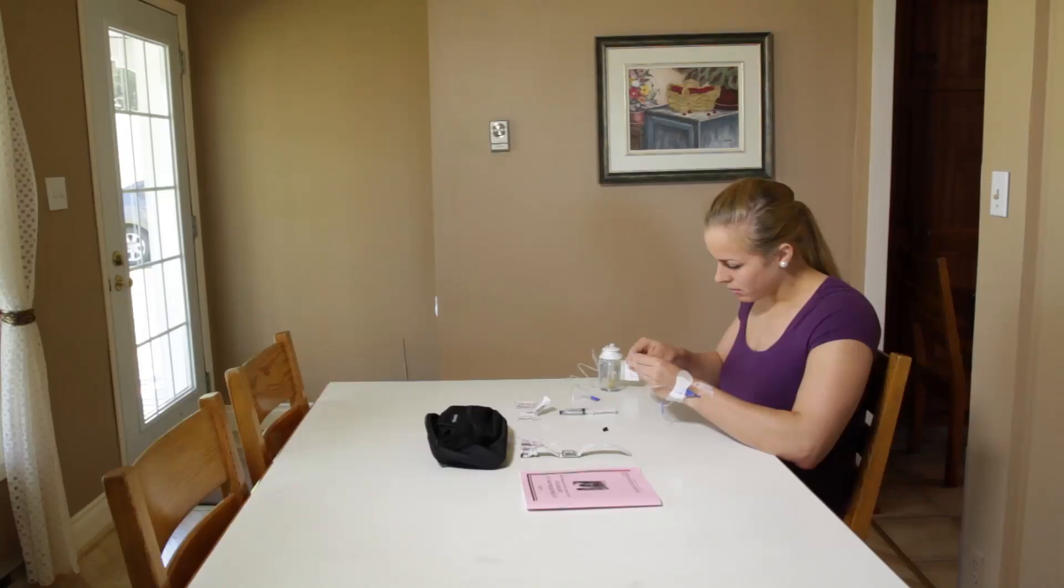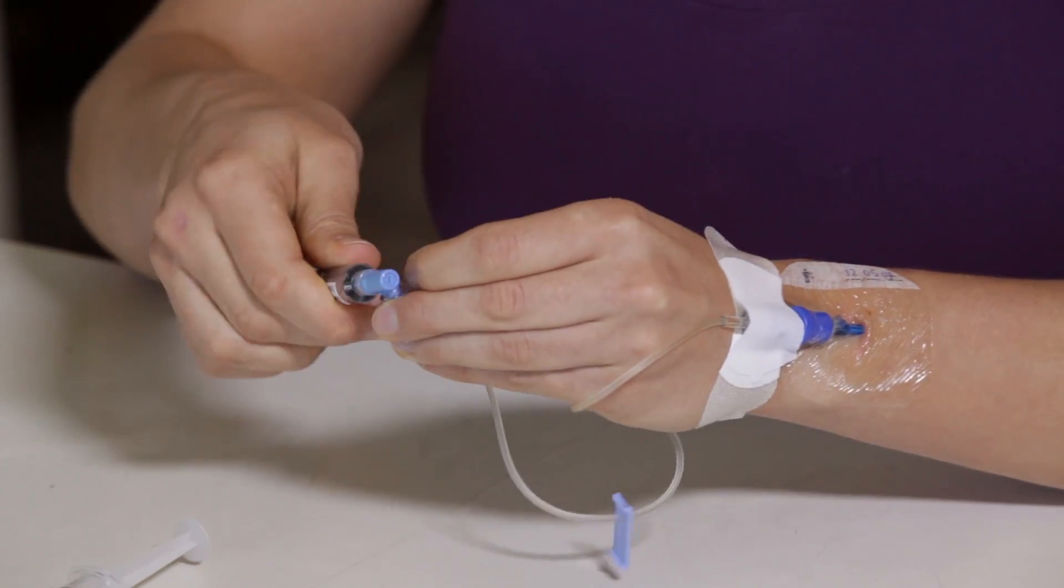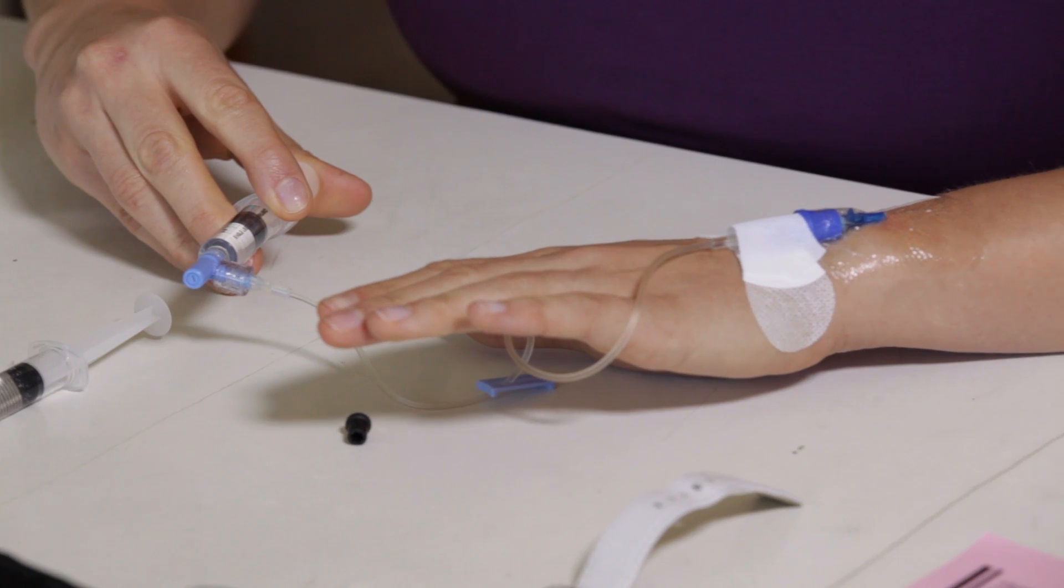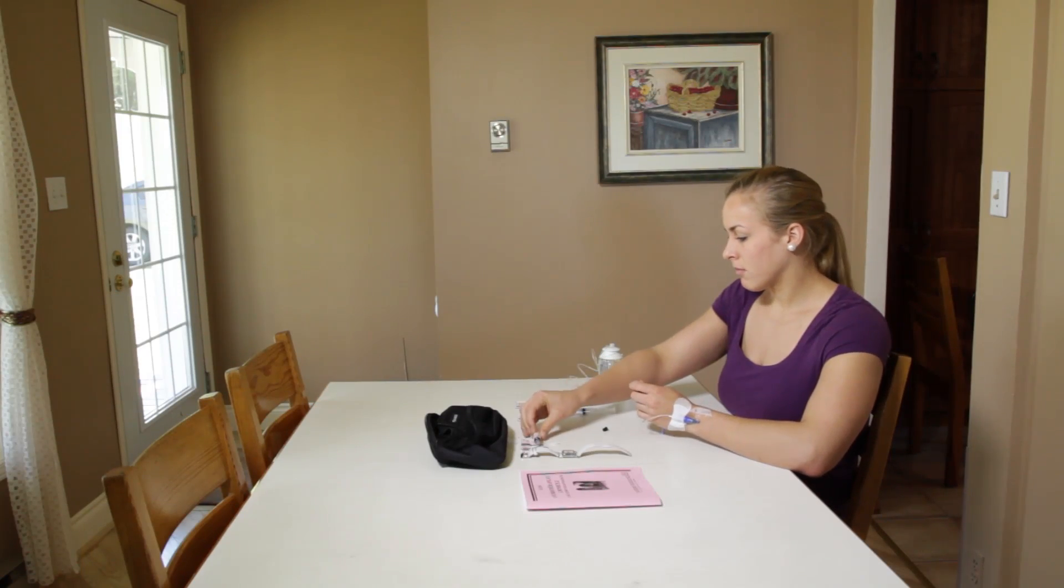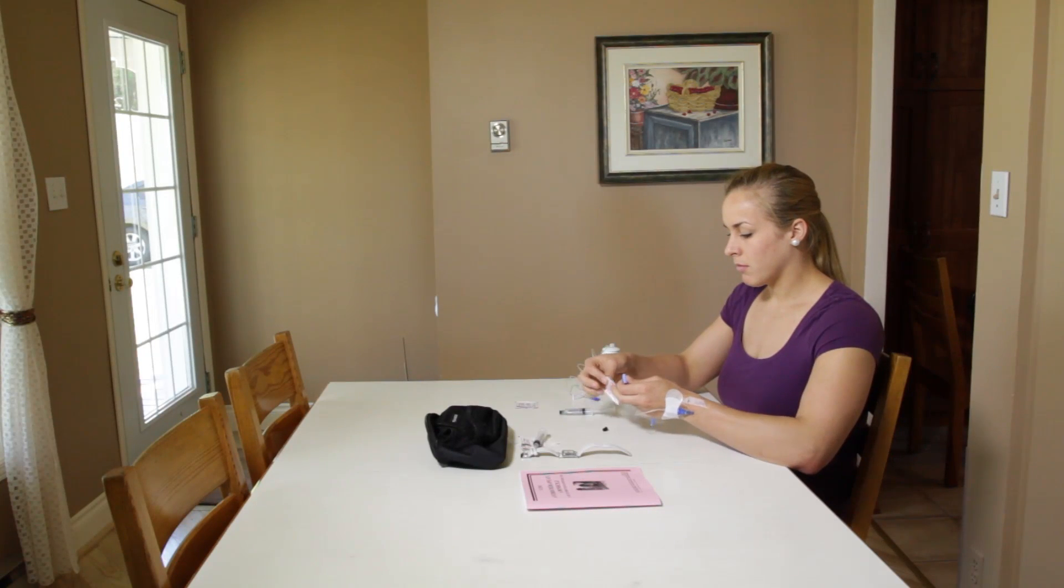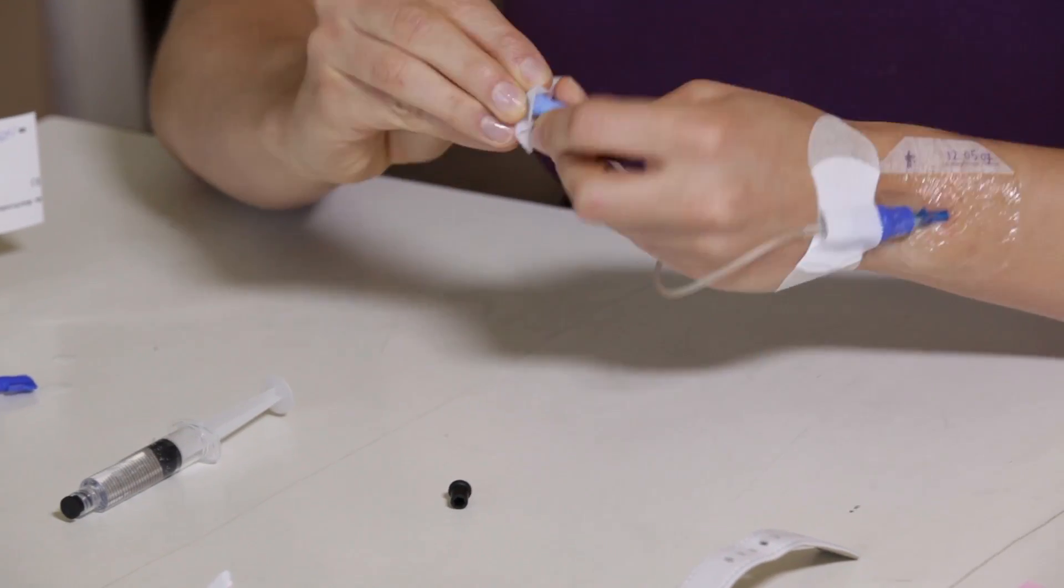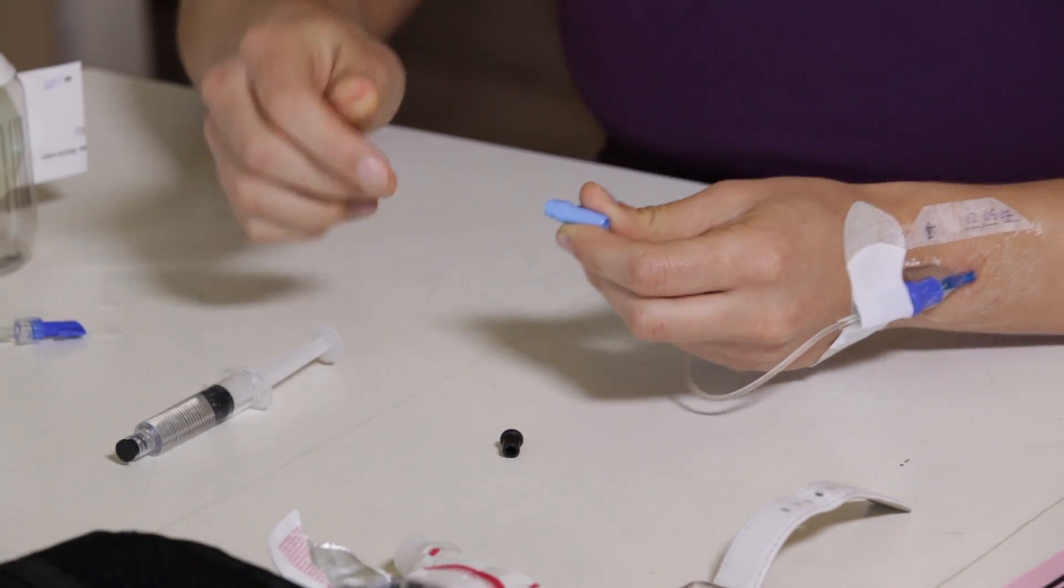Slowly inject the saline solution over 15 seconds. Ensure there is no leak, pain, or swelling during the injection. Once done, unscrew the syringe and put it aside. Disinfect the end of the tubing again using the second alcohol swab and let it dry for 30 seconds.